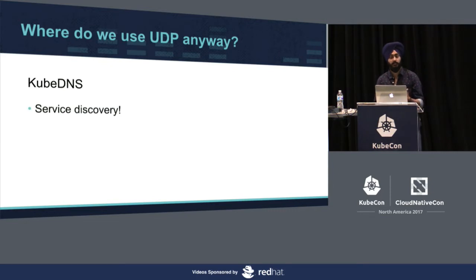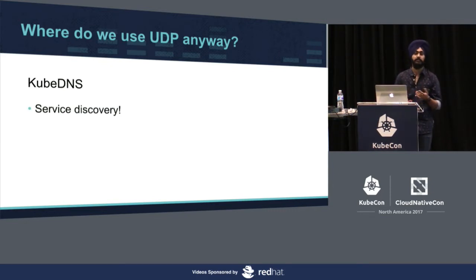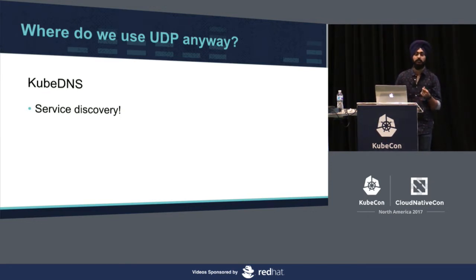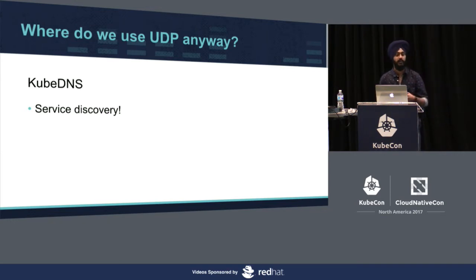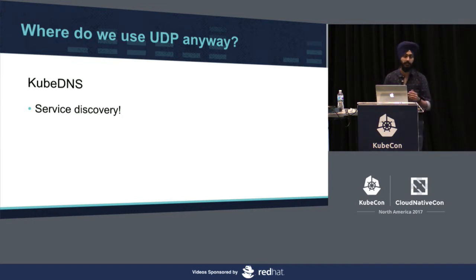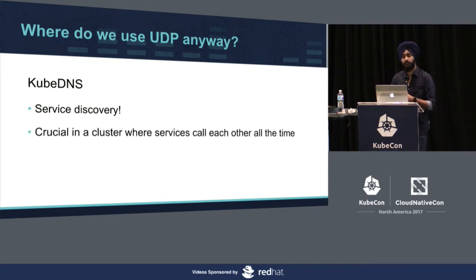KubeDNS is the backbone of service discovery in Kubernetes. If you have a lot of microservices that need to call each other, KubeDNS is essential for that. It is still called an add-on, but at this point it's no longer an add-on — it's a requirement. It's especially crucial in a cluster where services call each other all the time.